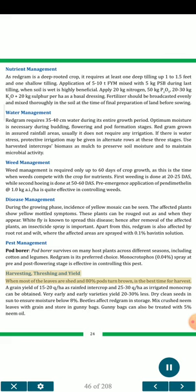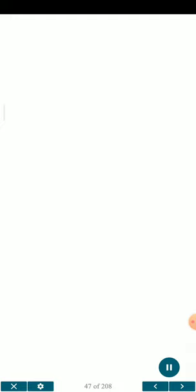Harvesting, threshing and yield: When most leaves are shed and 80% of pods turn brown is the best time for harvest. A grain yield of 15-20 q/ha for rainfed intercrop and 25-30 q/ha for irrigated monocrop can be obtained. Very early and early varieties yield 20-30% less. Dry and clean seeds in sun to ensure moisture below 8%. Beetles affect redgram in storage; mix crushed neem leaves with grain and store in gunny bags. Gunny bags can also be treated with 5% neem oil.